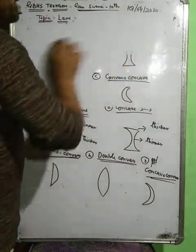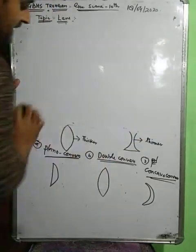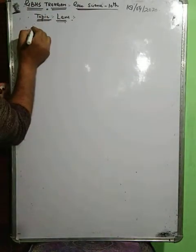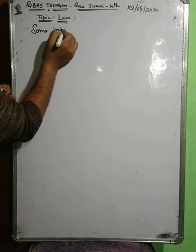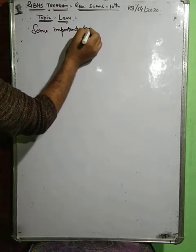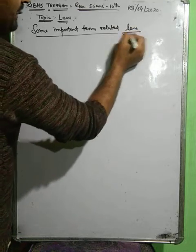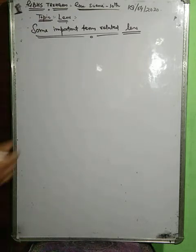Before going through the topics related to the lens, we have to discuss some important terms related to the lens — just as we discussed terms like center of curvature, radius of curvature, principal axis, and focal length for mirrors.